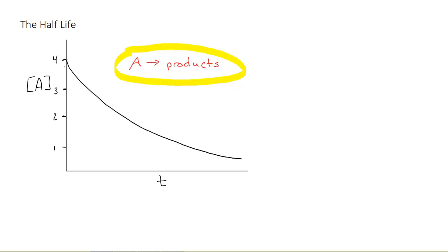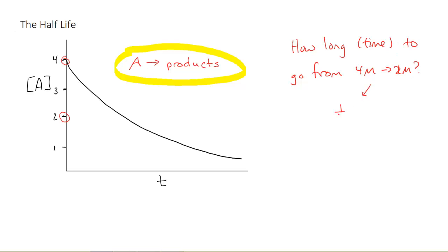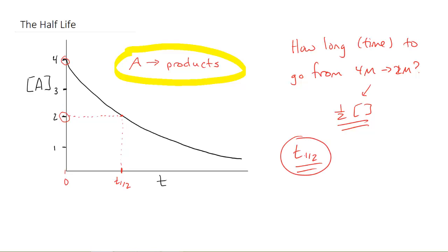If you take a good look at this, we started at a concentration of 4. We might ask ourselves: how long does it take to go from 4 molar to 2 molar? Because this is half the concentration, we're going to call this time the half-life. On the graph, it's easy to see that we started at 0 right here, and if we take this across, at this point we are at half our concentration. This would be T sub 1/2, which is the symbol for half-life.